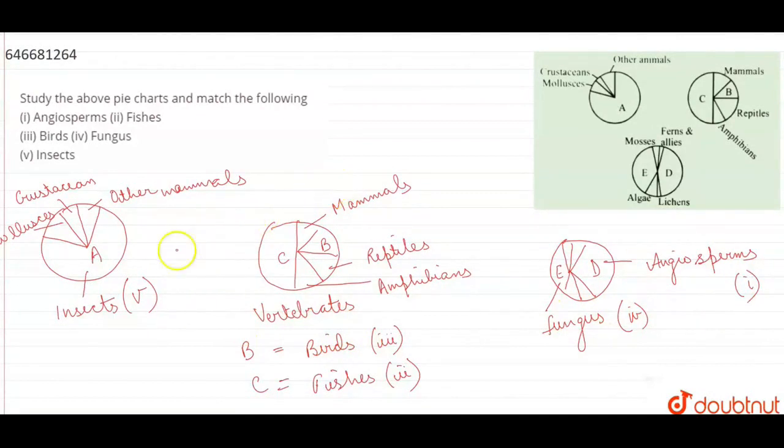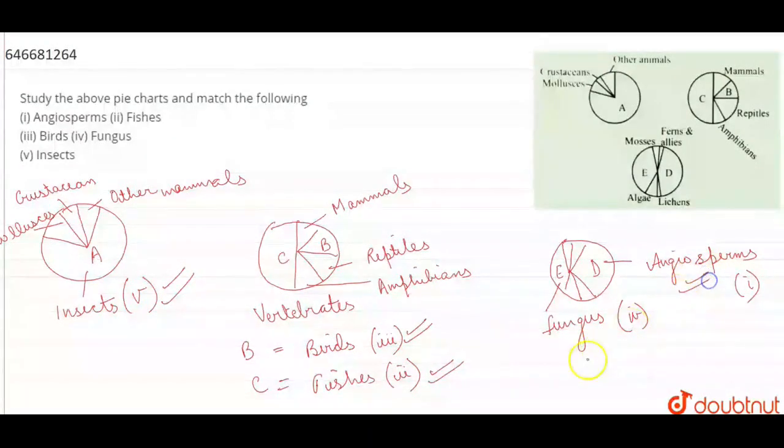So the answer for this question is: A is insects, B is birds, C is fishes, D is angiosperms, and E is fungus. Thank you.